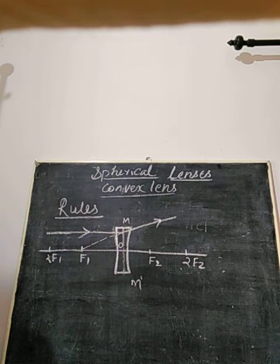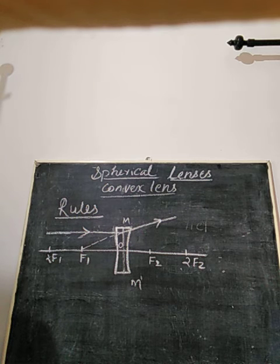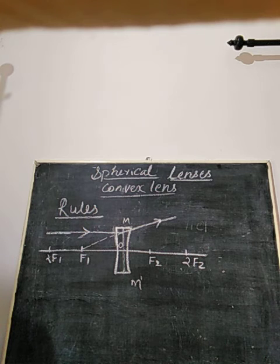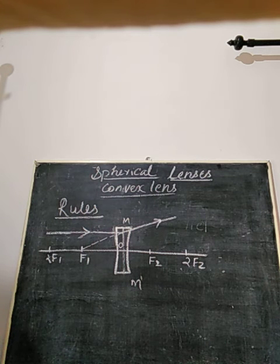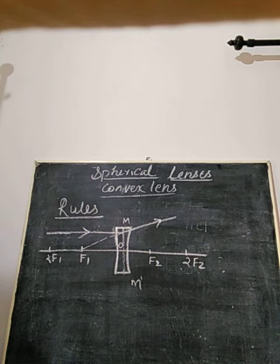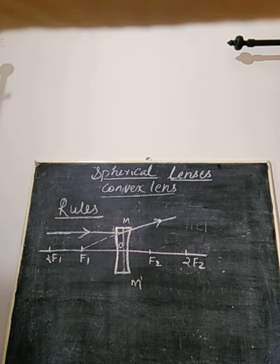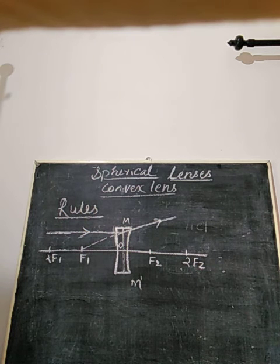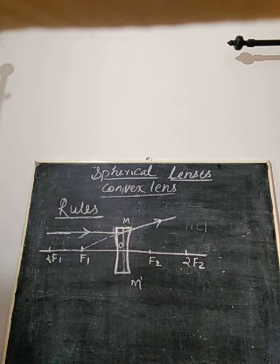Here we have the second rule. If a ray of light appears to meet at the principal focus f2 of the concave lens — that is, a ray moving towards the point f2 — after refraction, that ray will emerge parallel to the principal axis.